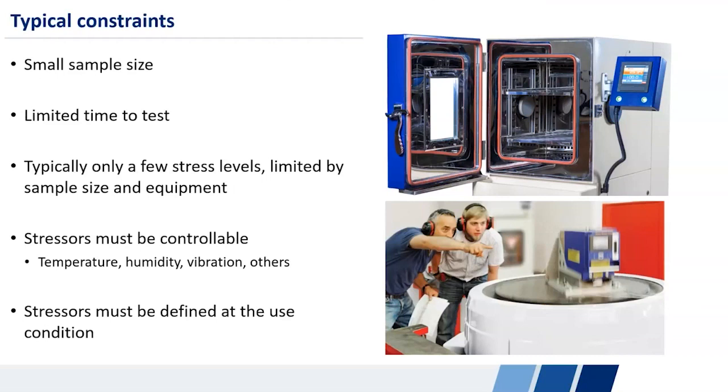On top of that, we don't have an unlimited number of test fixtures. So on the top is a temperature humidity chamber where we can control and vary the temperature humidity within. Below is another shaker table. For both of these, we probably don't have 50 in our lab. So we can't test 50 different stress levels. And so we might be limited to two or three stress levels. This is often the case.